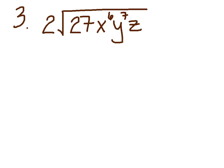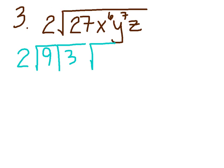Here goes nothing. I'm going to leave that 2. I'm going to break 27: 9 times 3 is 27, and 9 is a perfect square. For x to the 6th, I'm breaking them down into 2's because it's a square root. So I'm going to have one x squared — that's 2 — another x squared — that's a total of 4 — and another x squared, which gets me a total of 6.